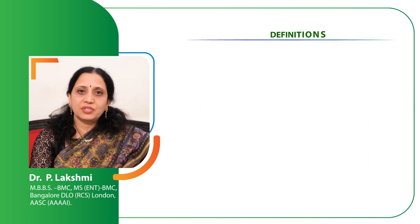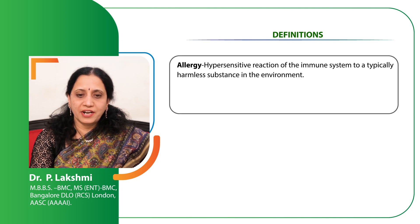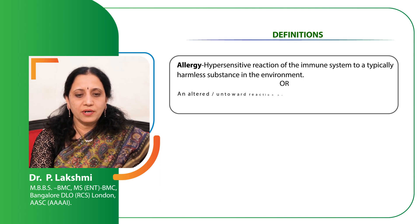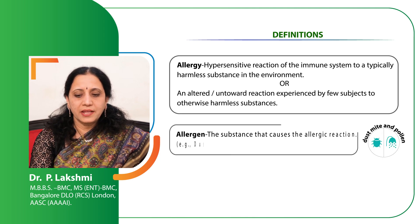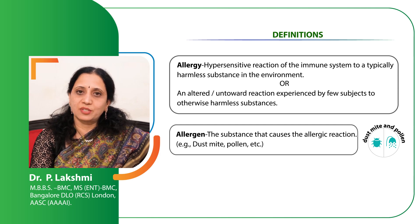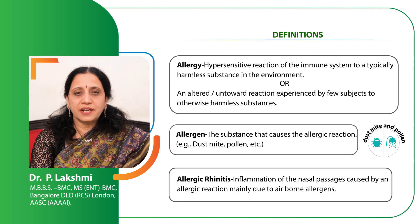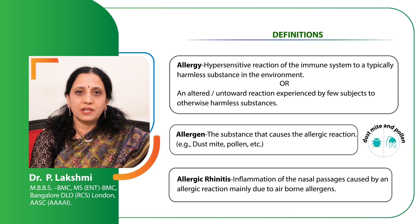What are the definitions? What do you mean by allergy? Allergy is a hypersensitive reaction of the immune system to a typically harmless substance in the environment, or it's an altered or untoward reaction experienced by few subjects to otherwise harmless substances. An allergen is a substance that causes the allergic reaction, such as dust mite or pollen. Allergic rhinitis is an inflammation of the nasal passages caused by an allergic reaction, mainly due to airborne allergens.